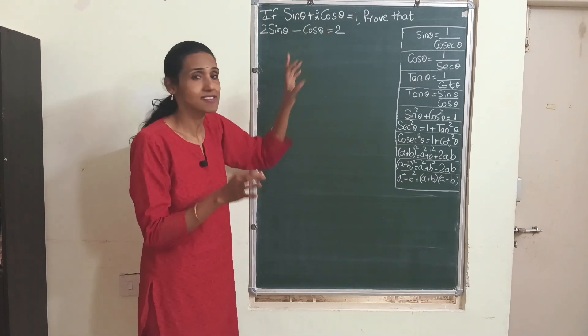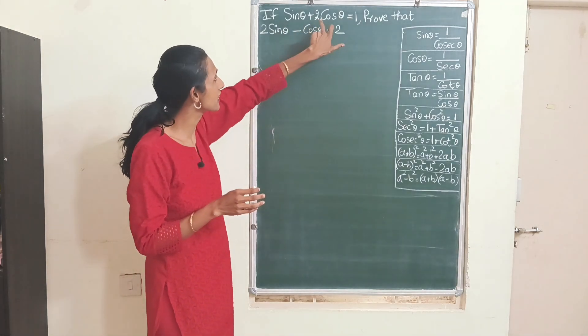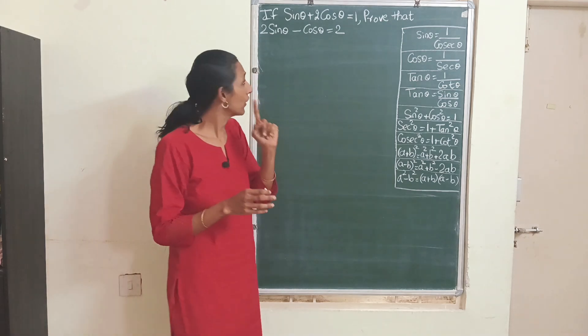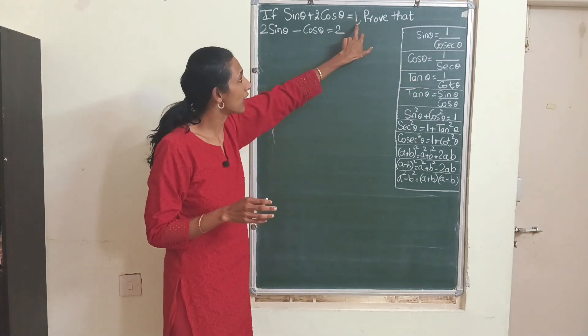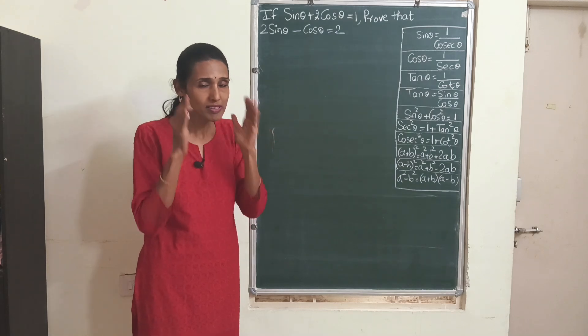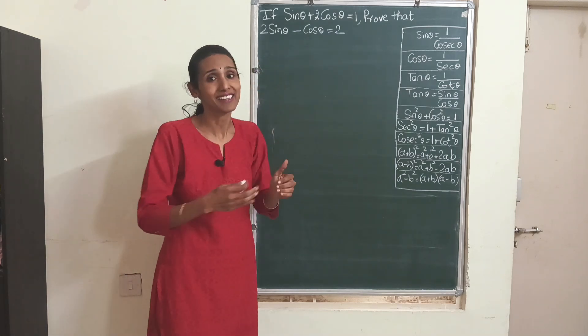Only thing is the position of 2 has changed. Here 2 is with cos θ, here 2 is with sin θ. Also here you have 1 on the RHS, here you have 2 on the RHS. So always make these observations before just starting to write the answer.